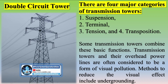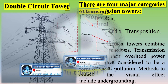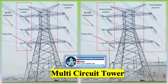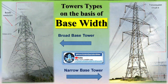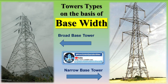The loads acting upon an electrical transmission tower are numerous and dynamic. These include: dead load of tower, dead load from conductors and other equipment, load from snow on conductors and equipment, ice load on the tower itself, erection and maintenance loads, wind load on the tower, wind load on conductors and equipment, loads from conductor tensile forces, and seismic activity loads such as earthquakes.